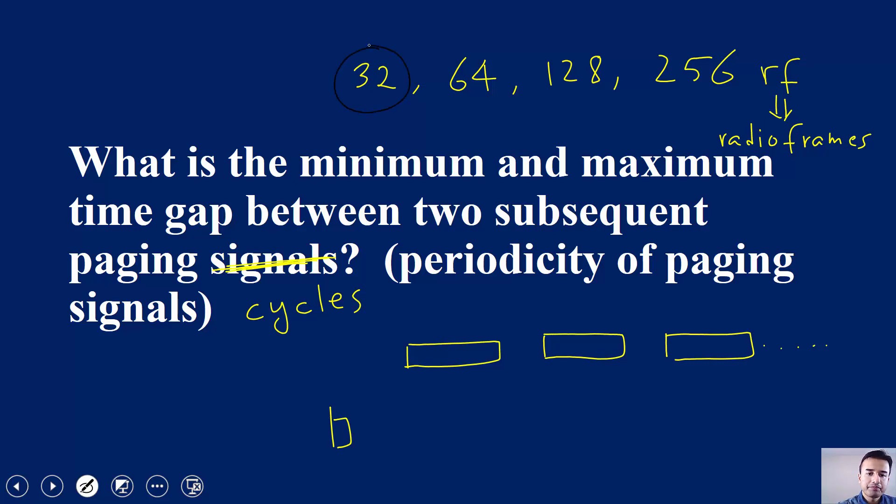If the paging cycle is 32, that means 32 radio frames, which simply means each radio frame is 10 milliseconds, so 32 means 320 milliseconds. So that means a user will wake up after every 320 milliseconds, or 0.32 seconds, in order to see if it is being paged or not.